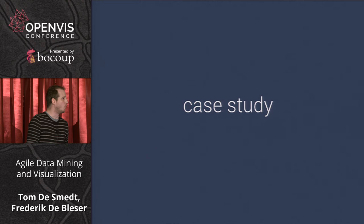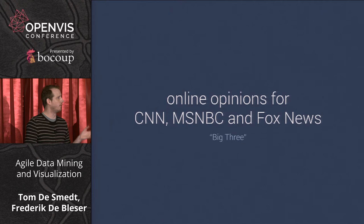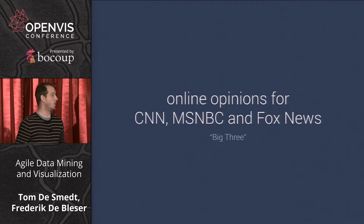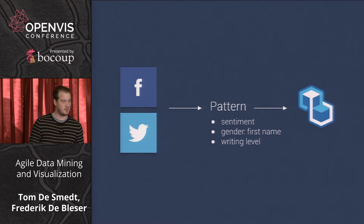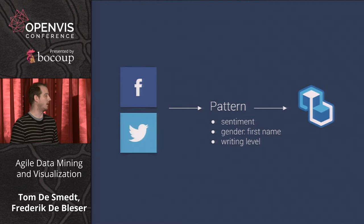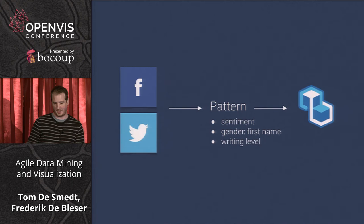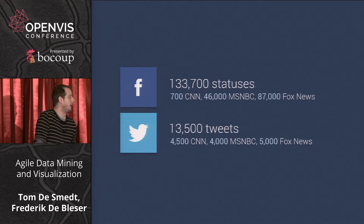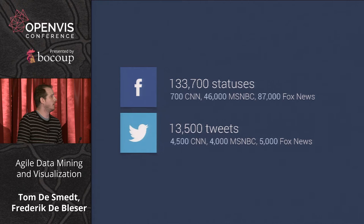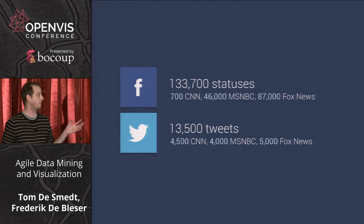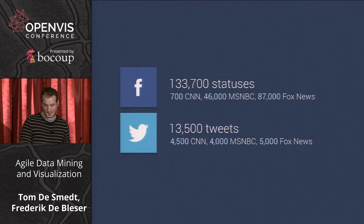We looked at what people comment on different US cable news companies — Facebook posts and tweets mentioning CNN, MSNBC, or Fox News. We gather the data, use Pattern to do sentiment analysis, try to find the gender of the person who posted, and determine writing level — the complexity of language use — then visualize it in Nodebox. We have about 130,000 Facebook statuses, mostly from Fox News, and about 13,000 tweets evenly distributed among CNN, MSNBC, and Fox News.